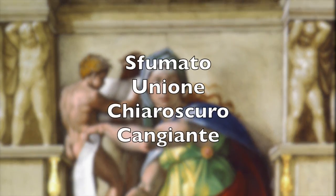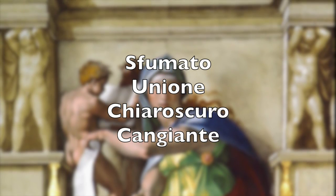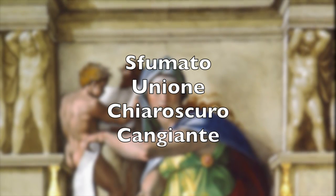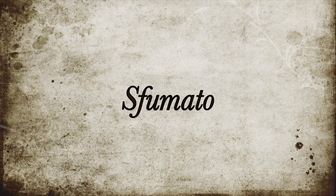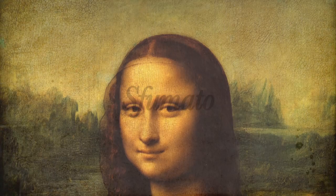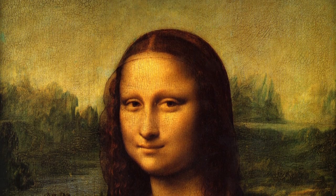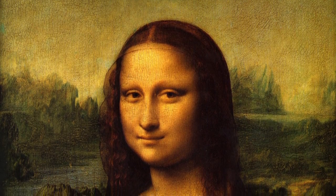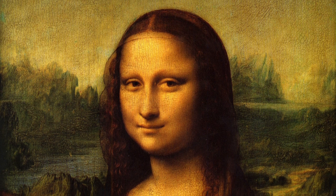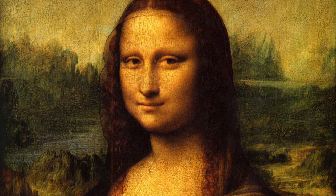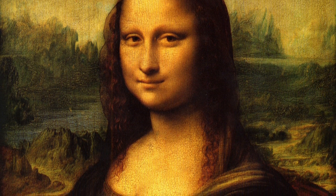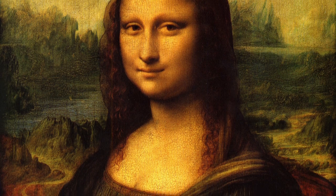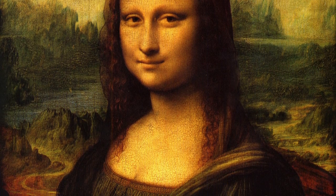Sfumato is a pictorial technique in which colors blend together. Sfumato creates an image that has no lines or edges around the figures, producing a soft, hazy effect.